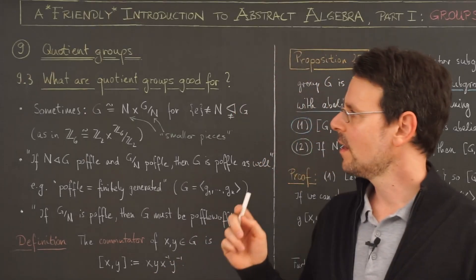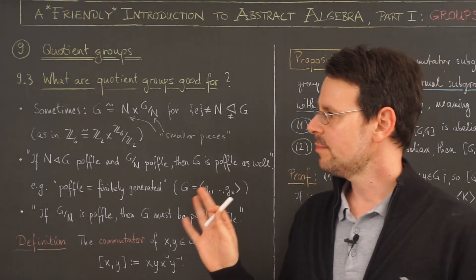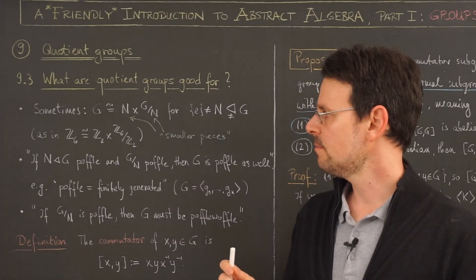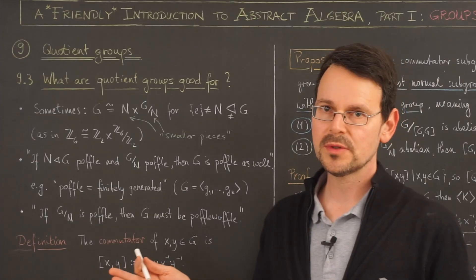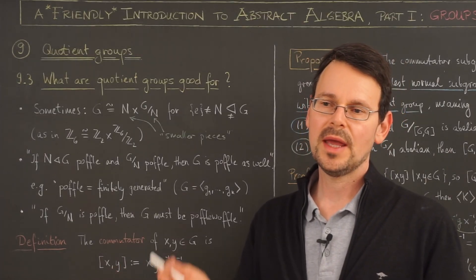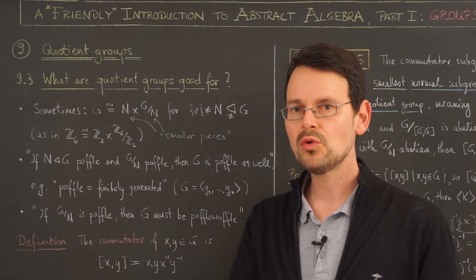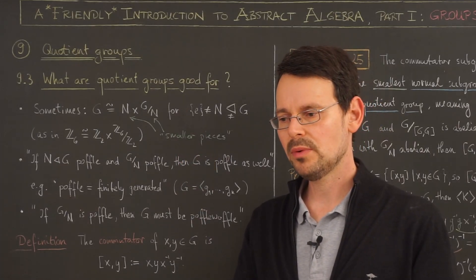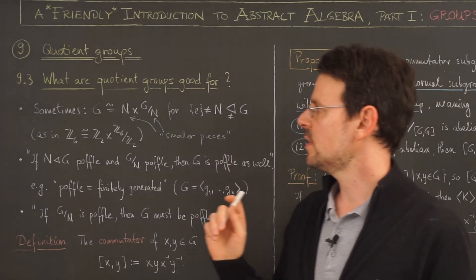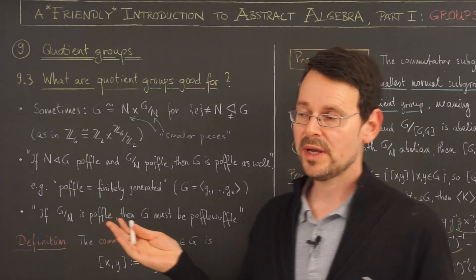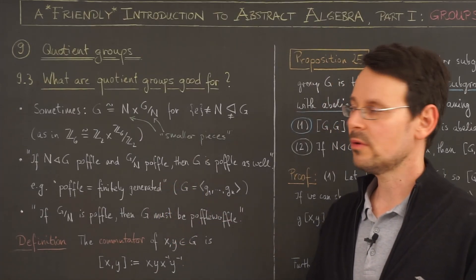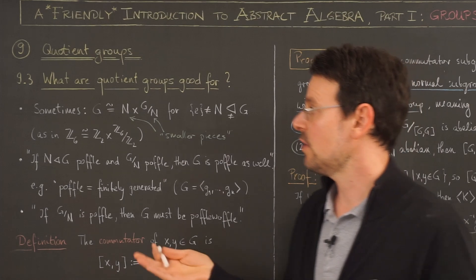Hello there. Let me give you a quick summary of what we have achieved so far. In the last few videos we learned about normal subgroups, what they are, and that taking the quotient by a normal subgroup gives me another group. Now I'm trying to convince you why it should be worthwhile to do that — why the concept of factoring out a group should be helpful at all.